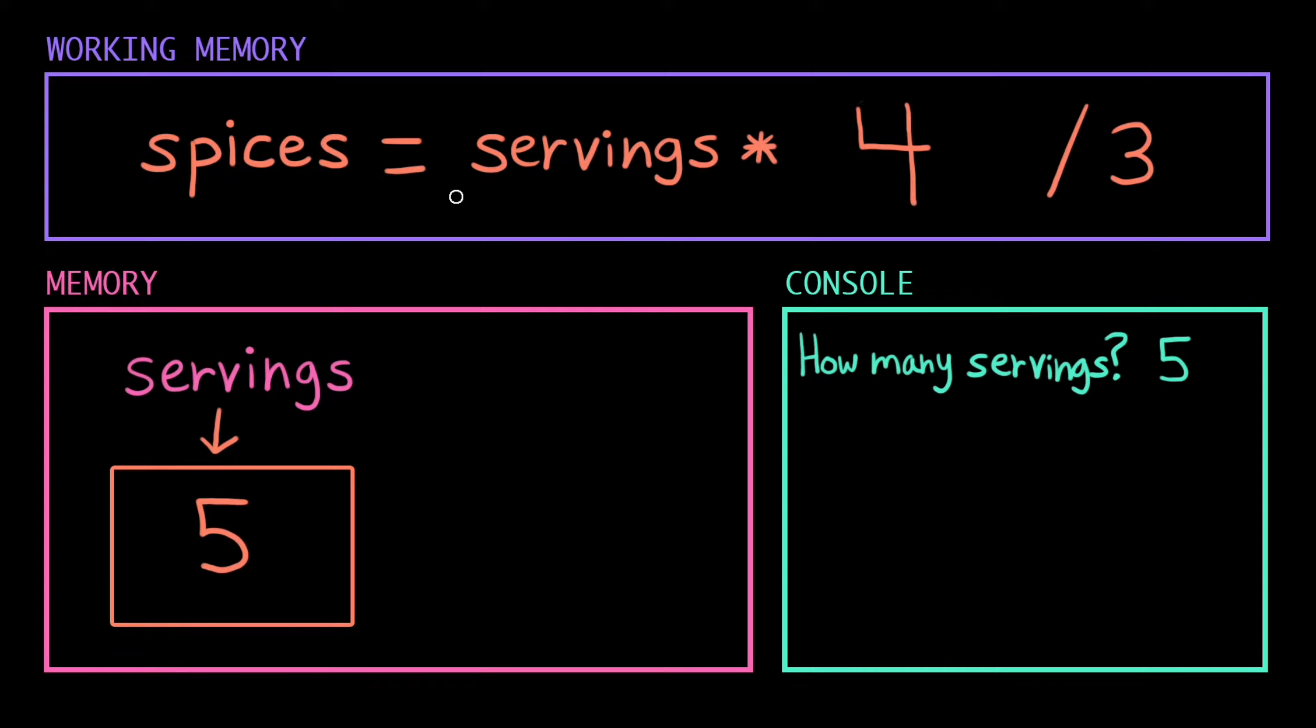First thing it sees is this variable, servings. It needs to go off and access that chunk of memory that was associated with the name servings. So it goes here, sees servings, follows that line, and it finds the value 5, so we substitute that in here. 5 times 4 is 20, then we have 20 divided by 3. This is the float division operator, so we get 6.66666 repeating.